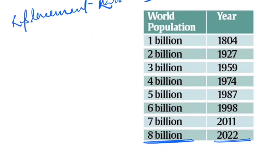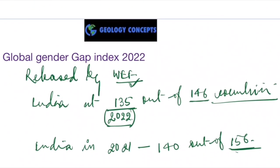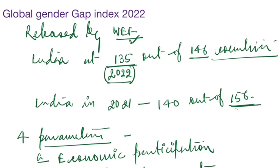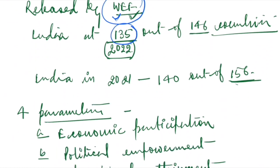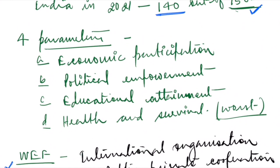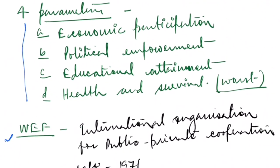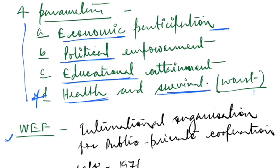Moving to the next topic: the Global Gender Gap Index, released by the World Economic Forum. India is at 135th place out of 146 countries, which is not very good. Last year India was at 140th place out of 156 countries. The four parameters on which the Global Gender Gap is measured are: economic participation, political empowerment, education, and health and survival.